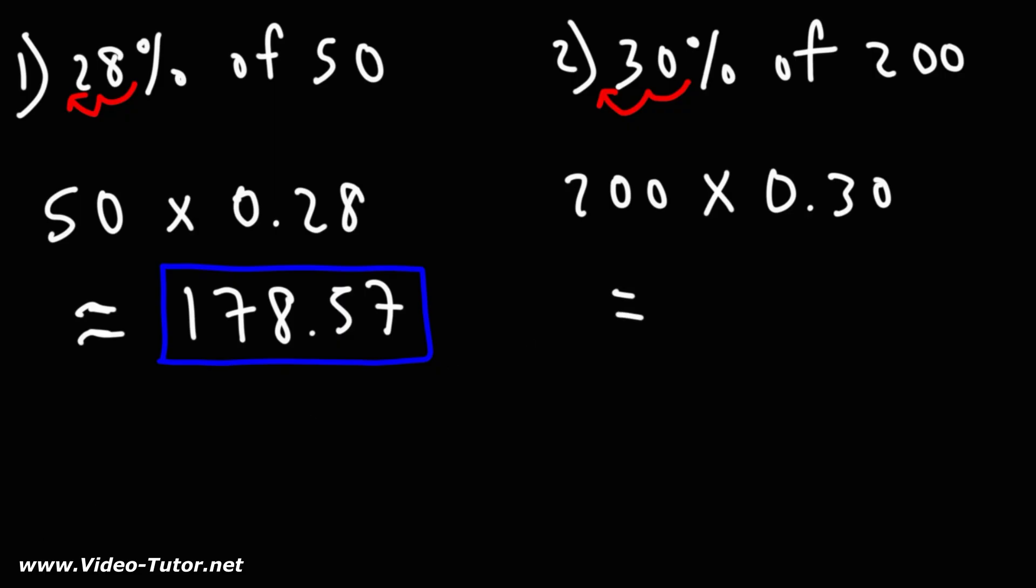And then you just got to multiply. 200 times 0.30 is 60. So 60 is 30% of 200.